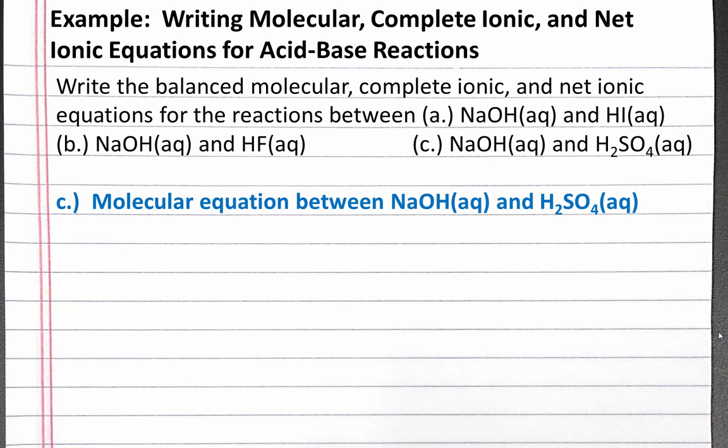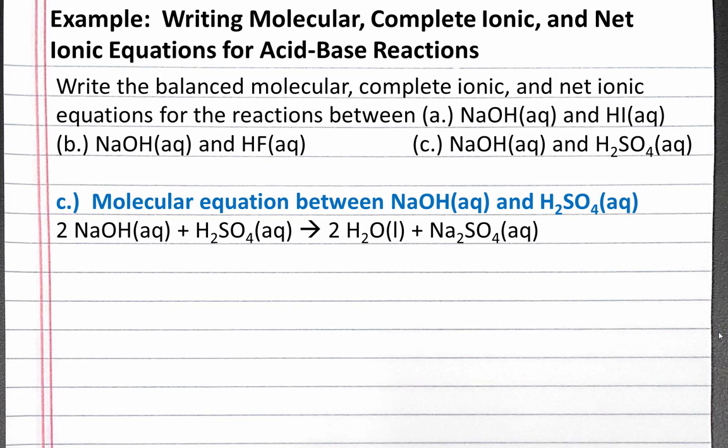Next, we'll write the molecular equation for the reaction between sodium hydroxide and sulfuric acid. We need two sodium hydroxide to react with sulfuric acid, because sulfuric acid is a diprotic acid, and it will produce two waters and sodium sulfate.